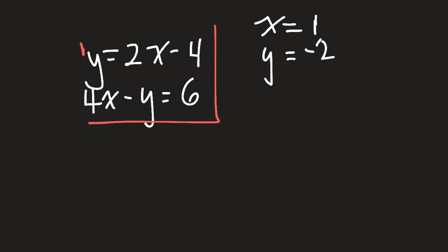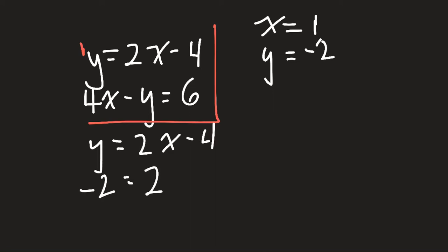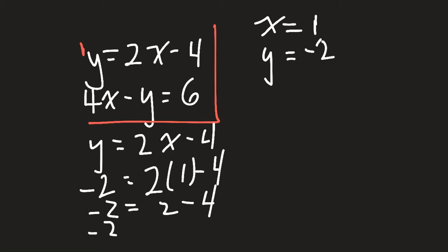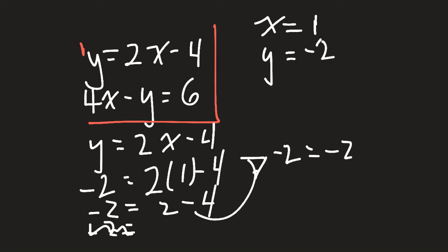For equation 1, I'll substitute in my values. Equation 1 is y equals 2x minus 4, which means negative 2 equals 2 times 1 minus 4. 2 times 1 is 2. So negative 2 equals 2 minus 4, and 2 minus 4 is negative 2. So that side is correct.